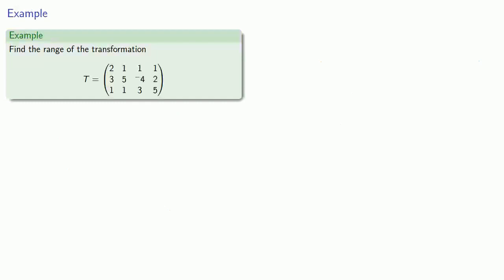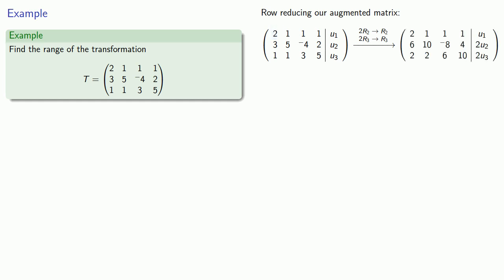So suppose we want to find the range of our transformation. We can row reduce the augmented coefficient matrix. So if the first row has pivot 2, we'll multiply the second and third rows by 2. We'll add multiples of the first row to clear out the entries below the first row pivot and get a new matrix.